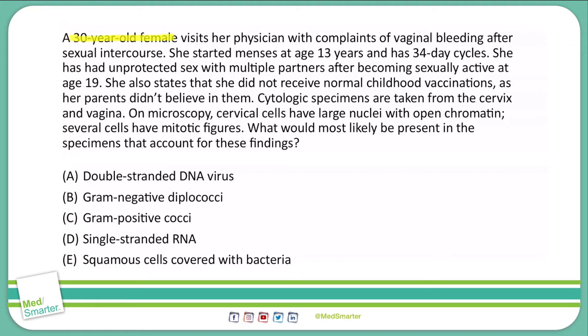A 30-year-old female visits her physician with complaints of vaginal bleeding after sexual intercourse. She started menses at age 13 and has 34-day cycles. She has had unprotected sex with multiple partners after becoming sexually active at age 19. She also states that she did not receive normal childhood vaccinations as her parents didn't believe in them. Cytologic specimens taken from the cervix and vagina show on microscopy cervical cells with large nuclei, open chromatin, and several cells with mitotic figures.